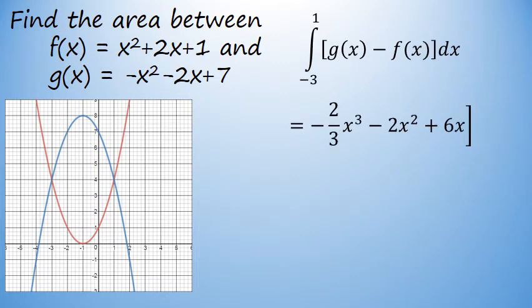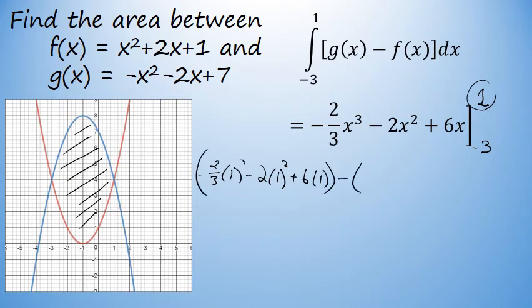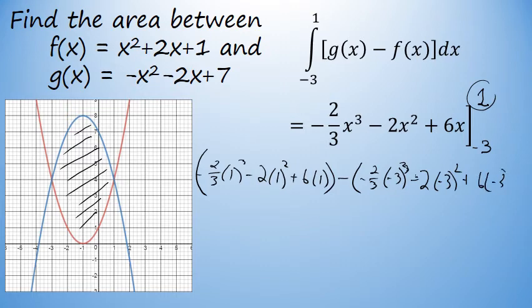Now that we've applied the power rule to each term, we'll substitute negative 3 and 1 for x. Substituting 1 for x first yields negative 2 thirds times 1 to the third power minus 2 times 1 squared plus 6 times 1. From this we subtract the result of substituting negative 3 for x, which is negative 2 thirds times negative 3 to the third power minus 2 times negative 3 squared plus 6 times negative 3.